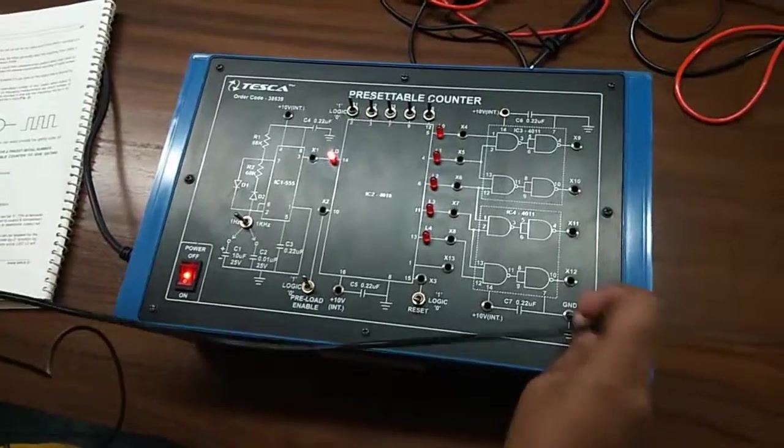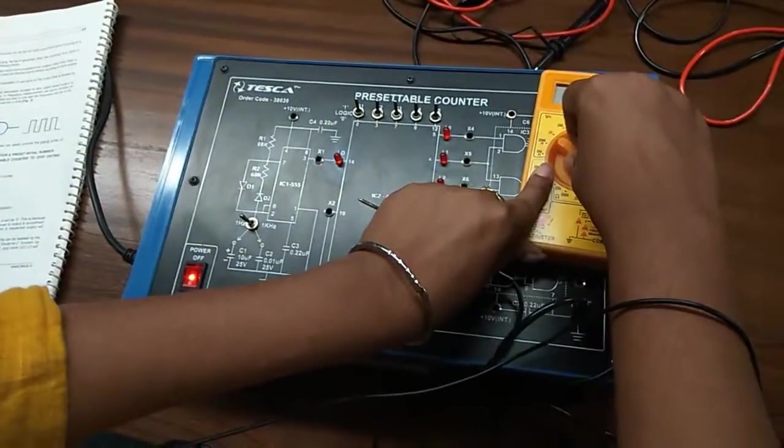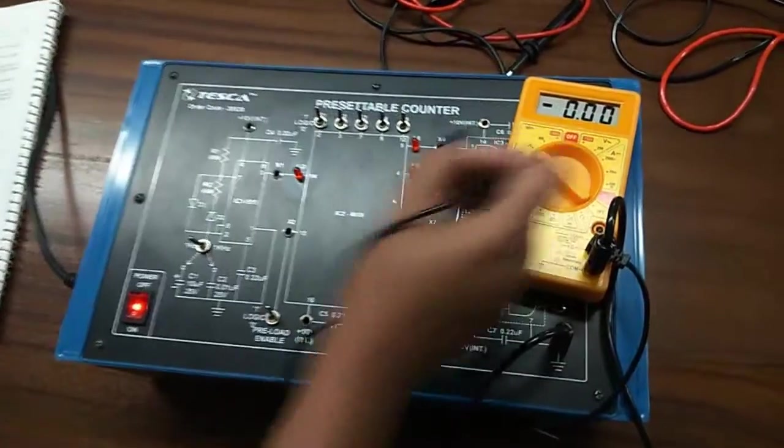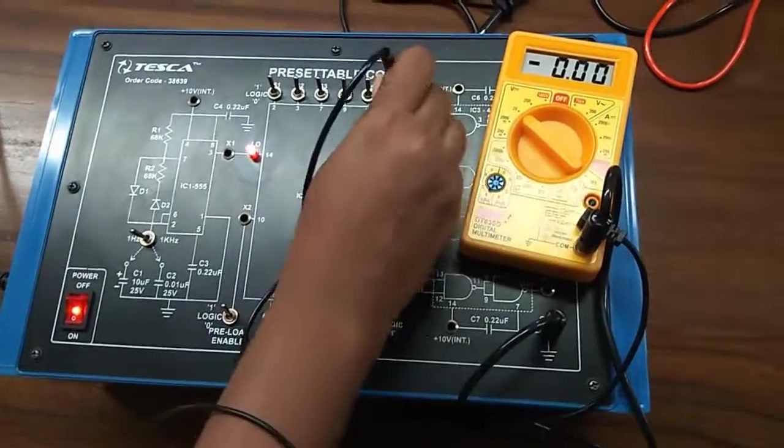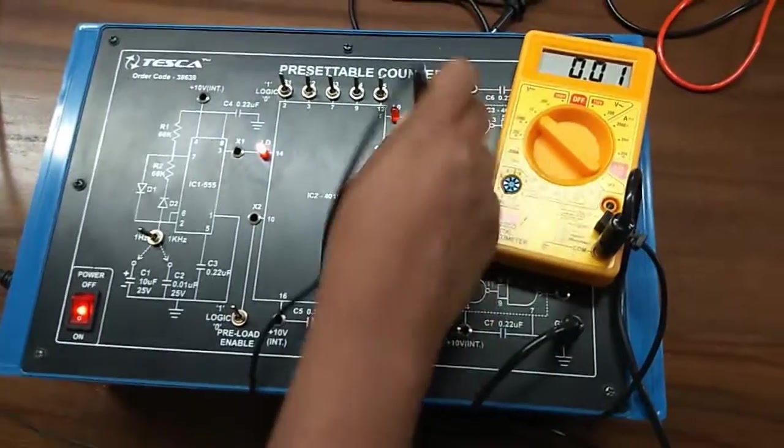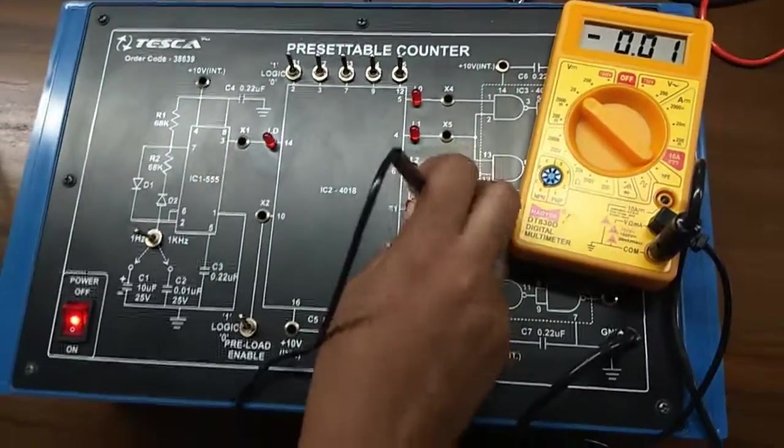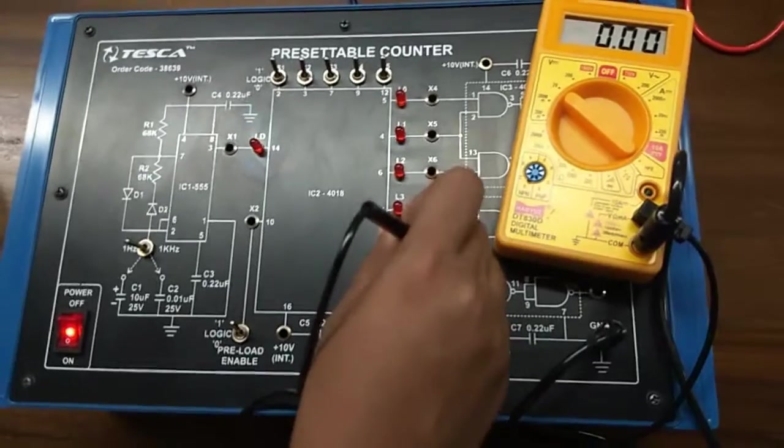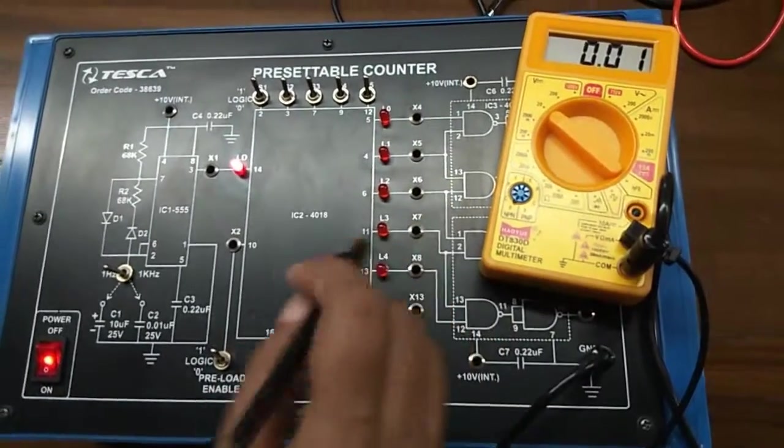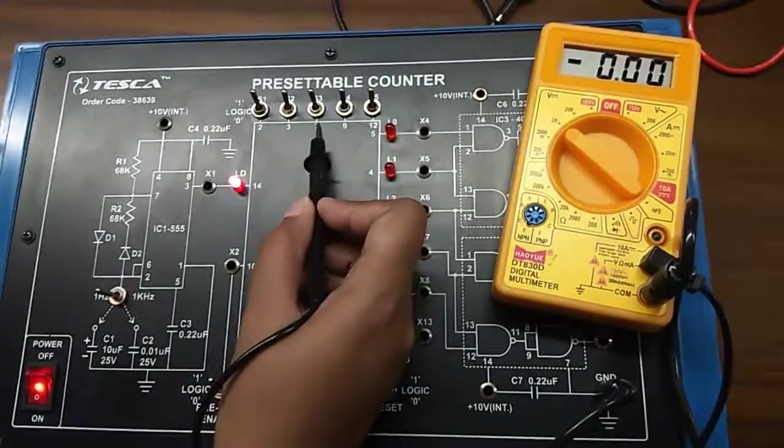Now, using a multimeter, check the voltage for X4 to X8 sockets. You can see that the voltage is 0.